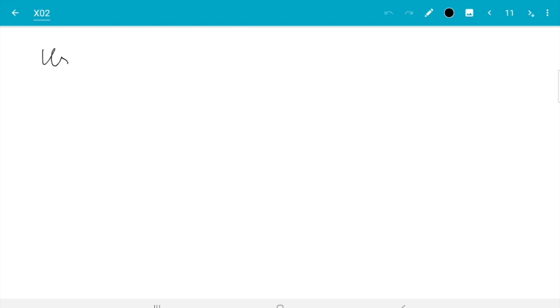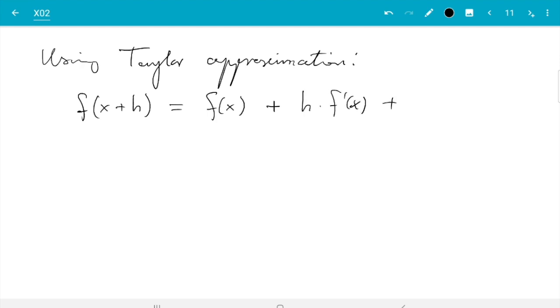So what we do is we will use Taylor approximation. Just to remind you, f(x+h) is f(x) plus h times f'(x) plus h squared over 2 f''(x) and so on. And at some point you need to write an error term.